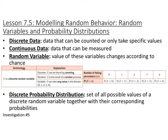I would pause the video and write down these vocab words. So a little review: discrete data is data that can be counted or only take specific values. Continuous data is data that can be measured, so like time or length. A random variable — the value of these variables changes according to chance.